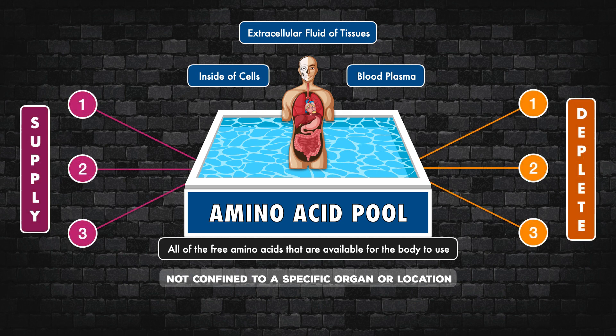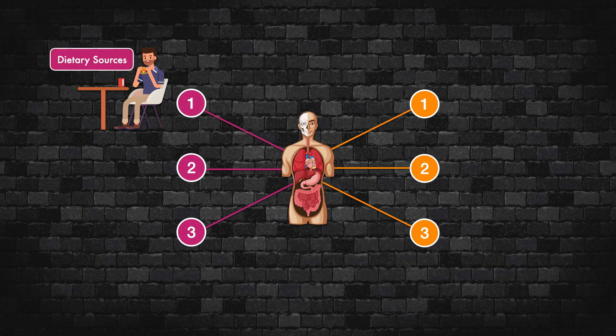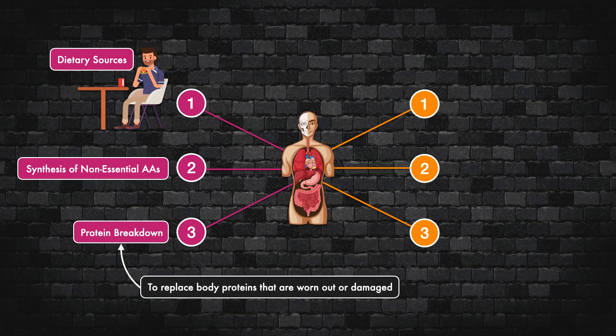In total, there are three sources that supply the amino acid pool, and three sources that deplete it. For the sources that supply it, we have the amino acids from the protein we eat, digest, and absorb — our dietary sources. Then we have the non-essential amino acids that are synthesized by cells, and we have the amino acids that are conserved after protein breakdown, which occurs to replace proteins that are worn out or damaged. Many of the amino acids from the old protein get recycled.